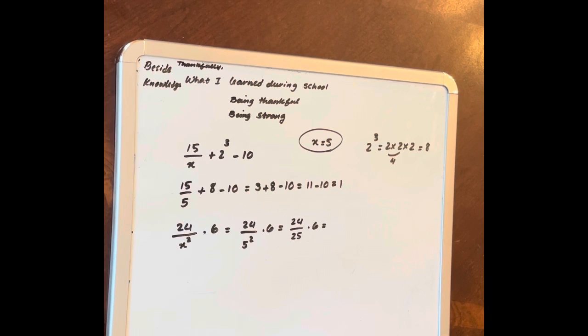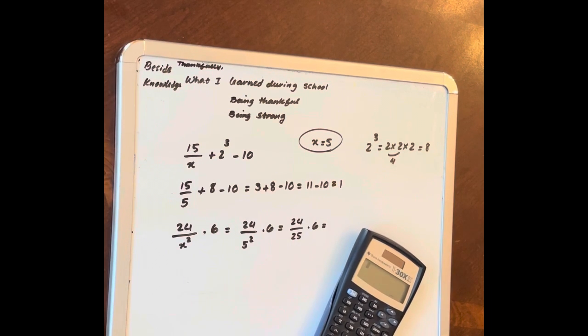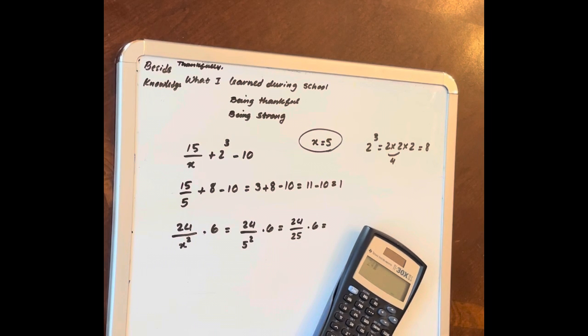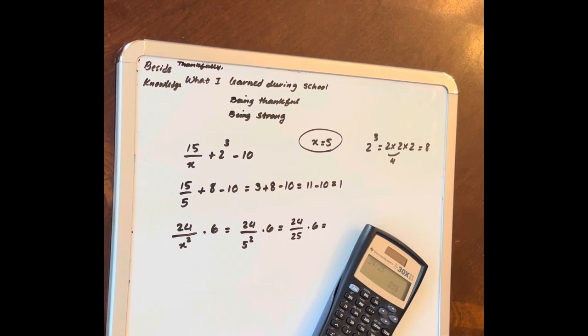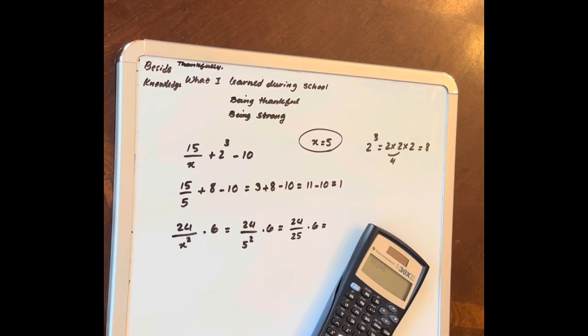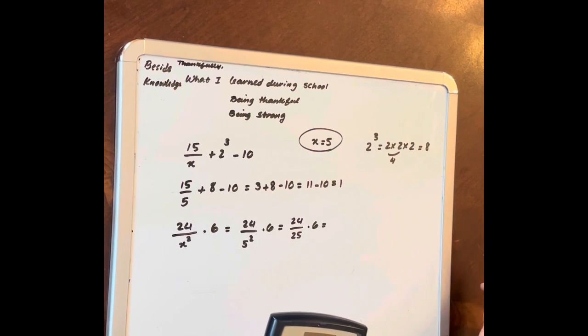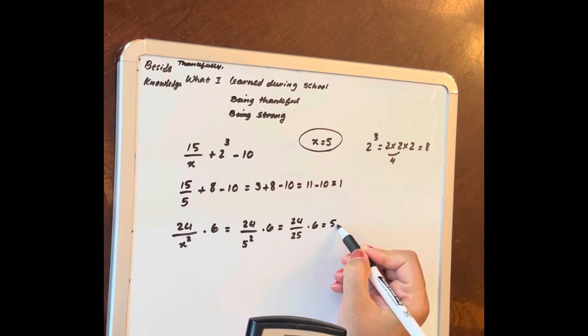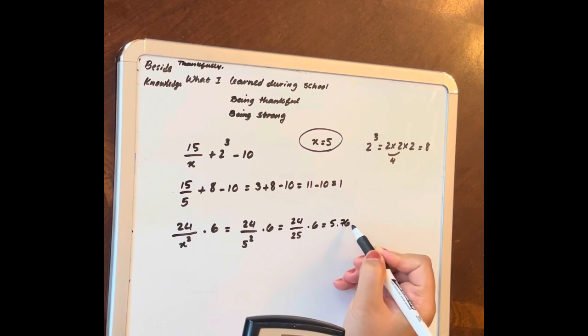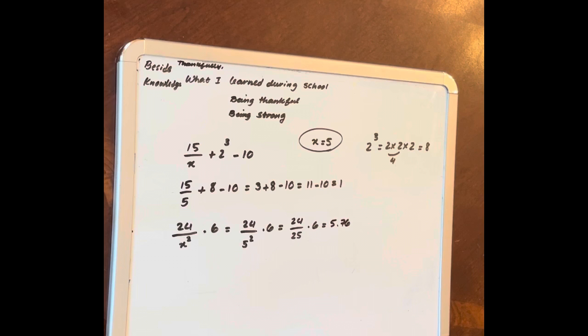So on the calculator you put 24 divided by 25 equal multiply by 6 equal. It's 5.76.